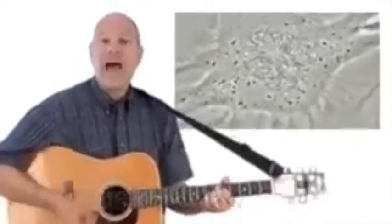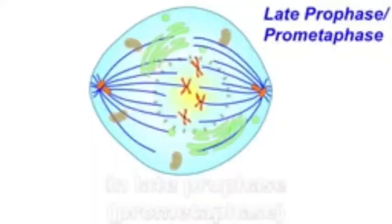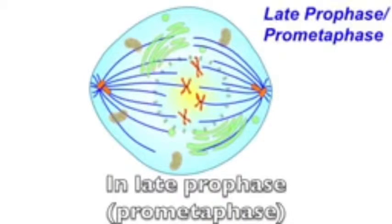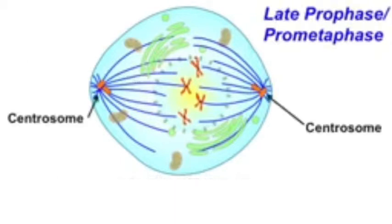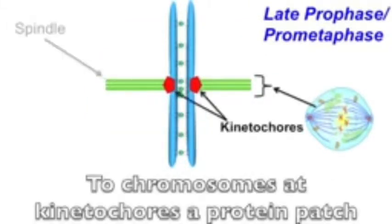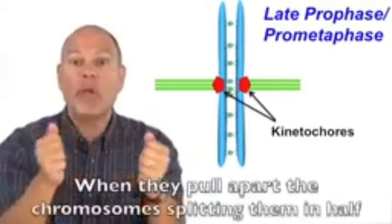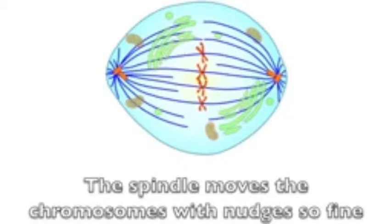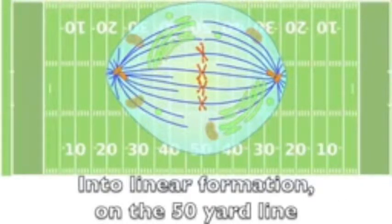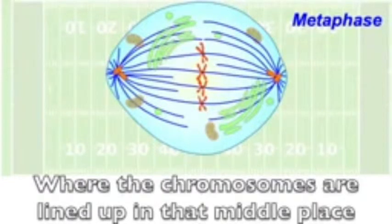Mitosis — chromosomal ride in a prophase, metaphase, anaphase, telophase divide. Eukaryotes flow from one cell to two. Mitosis: how cells renew. In late prophase/prometaphase, the nuclear membrane disintegrates, the centrosomes migrate to opposing sides, and spindle fibers wind between them. The spindle is made of microtubule fibers that attach to chromosomes at a kinetochore — a protein patch the fibers can grasp. The spindle moves chromosomes into linear formation at the equatorial plate, defining metaphase.